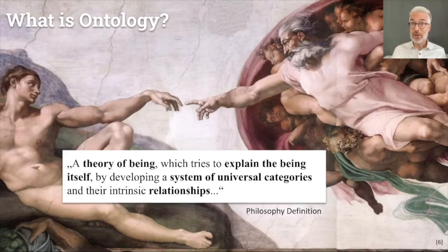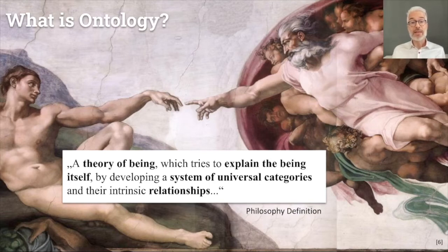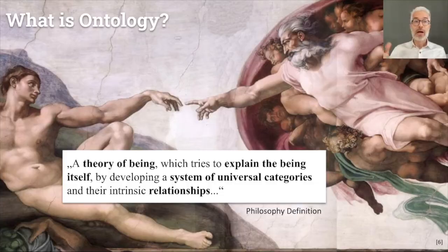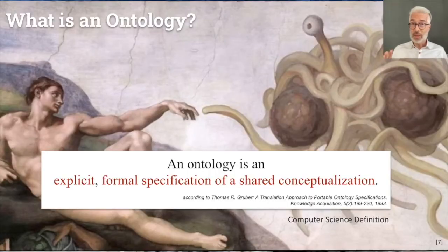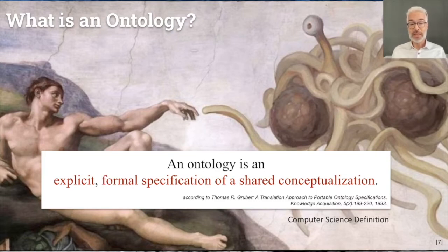What are ontologies? Ontology is an old concept — in philosophy and antiquity, they called it metaphysics. Ontology in philosophy is a theory of being that tries to explain being itself by developing systems of universal categories and their intrinsic relationships — exactly what Aristotle did, as shown by the Porphyrian tree. In computer science, we have a more pragmatic definition: an ontology is an explicit formal specification of a shared conceptualization.